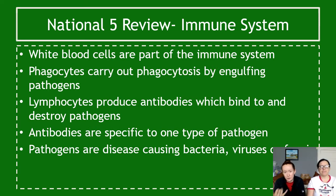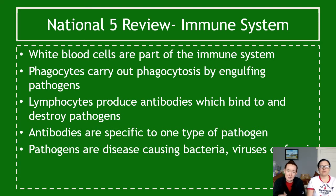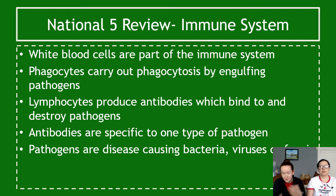In terms of what you learned at National and National 5 about the immune system, you learned a little bit in the multicellular organisms topic — that white blood cells are the really important part of the immune system. The two main types are phagocytes and lymphocytes. Phagocytes are like Pac-Man; they carry out phagocytosis, engulfing a pathogen. Lymphocytes don't go up to a pathogen — they produce antibodies that bind with the pathogen. Antibodies are specific to pathogens, while phagocytes deal with any type. Pathogens are any disease-causing organisms: bacteria, viruses, fungi, parasites.